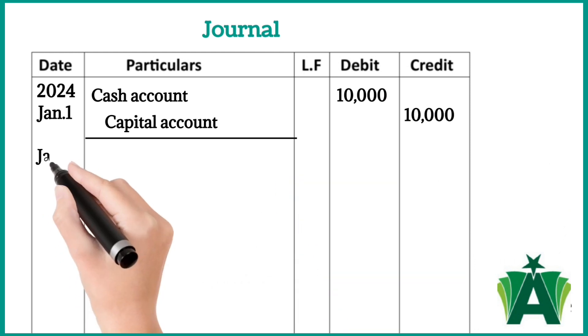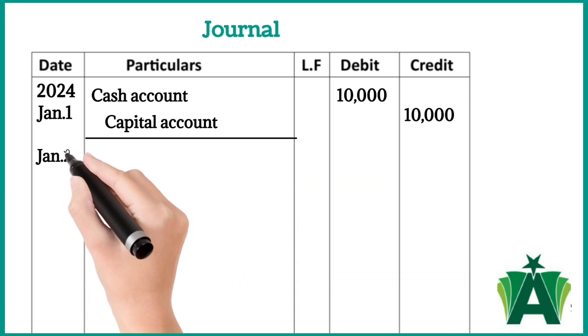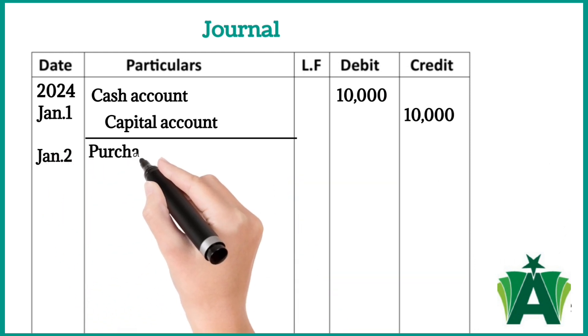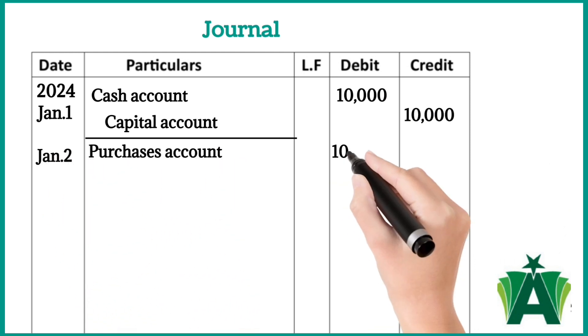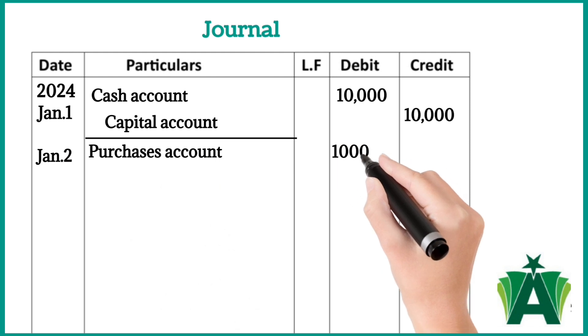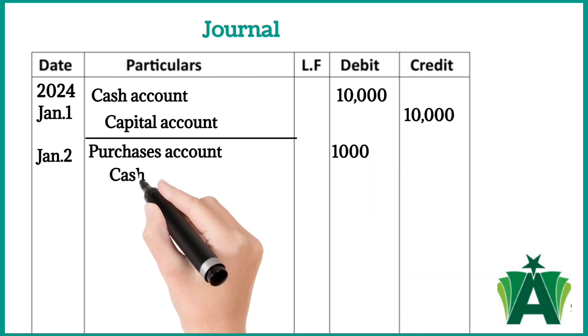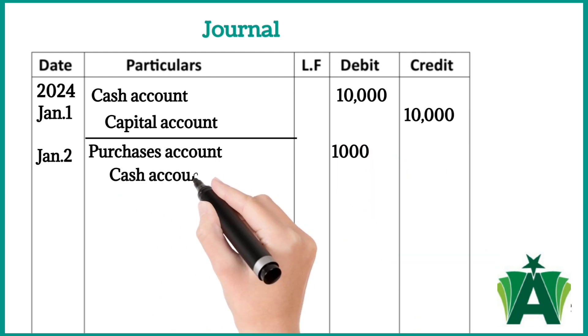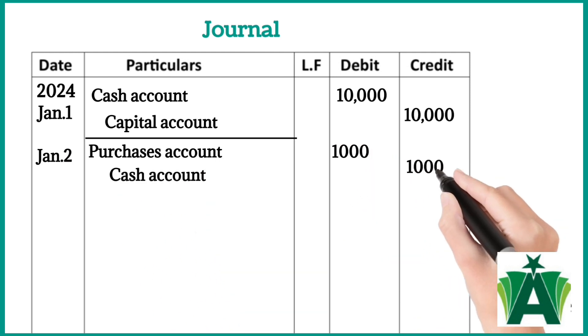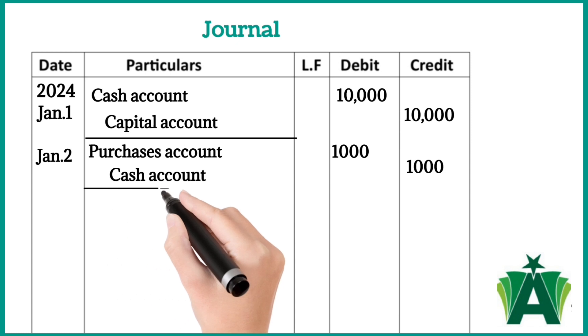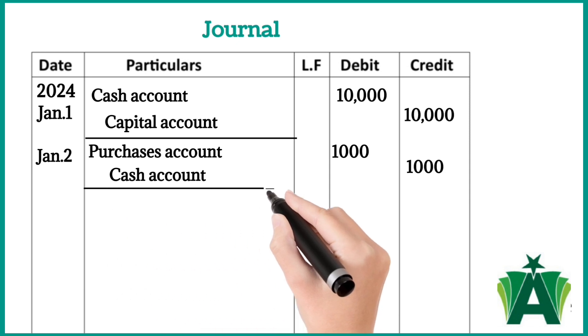The second transaction: purchased goods for cash $1,000. Purchases account is debited because of an asset increase in the business. Cash account is credited — this decreases the value of cash.